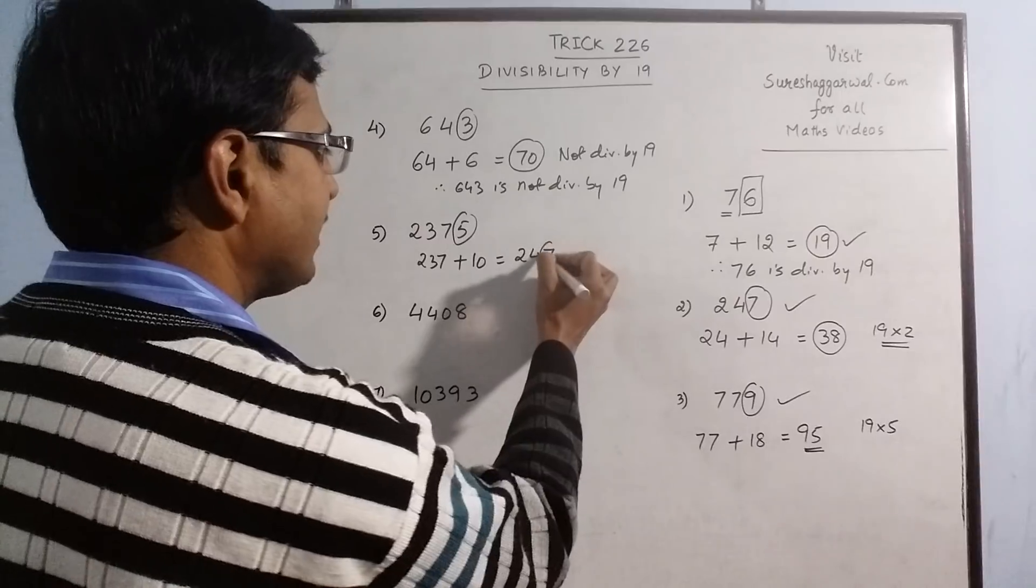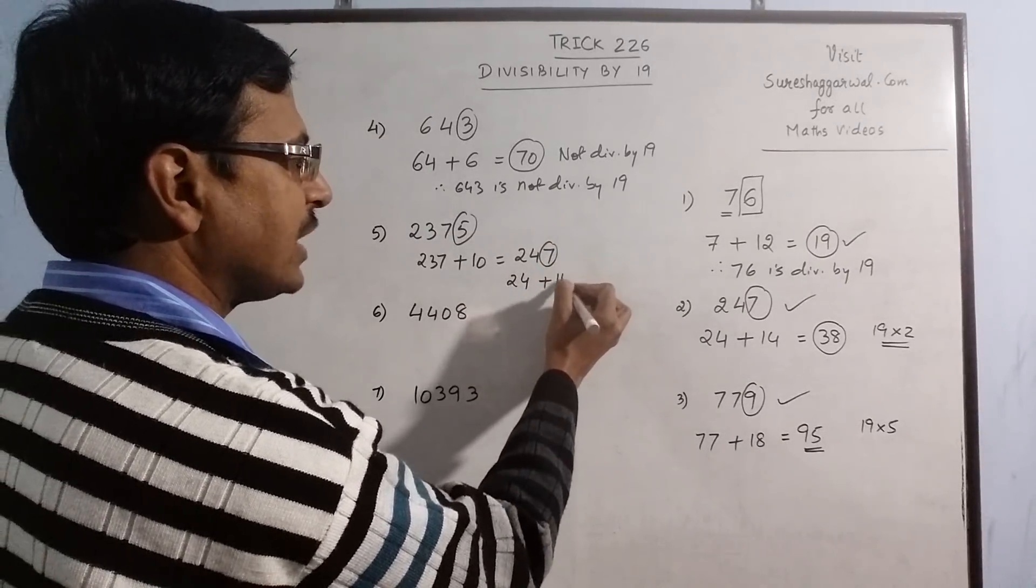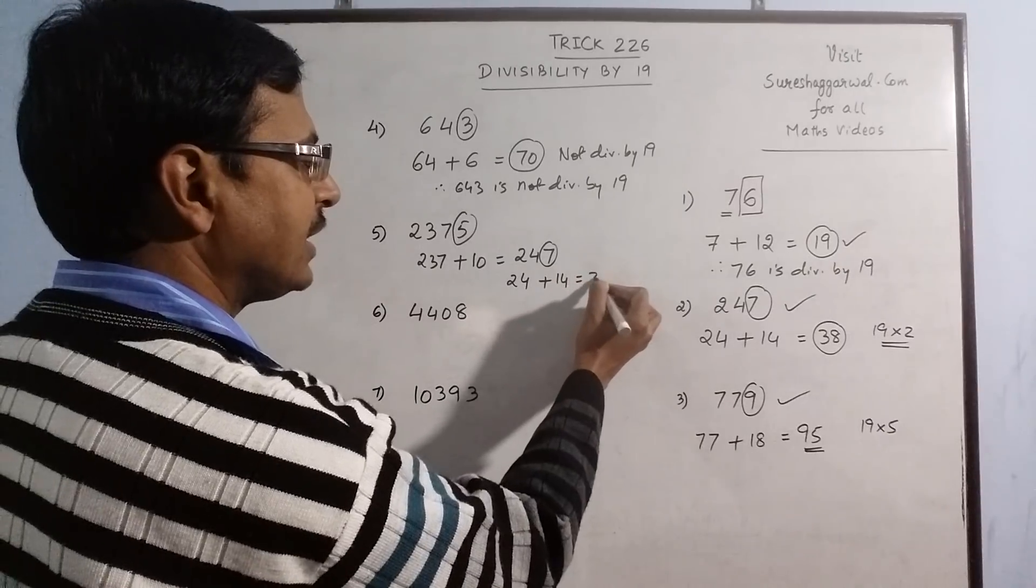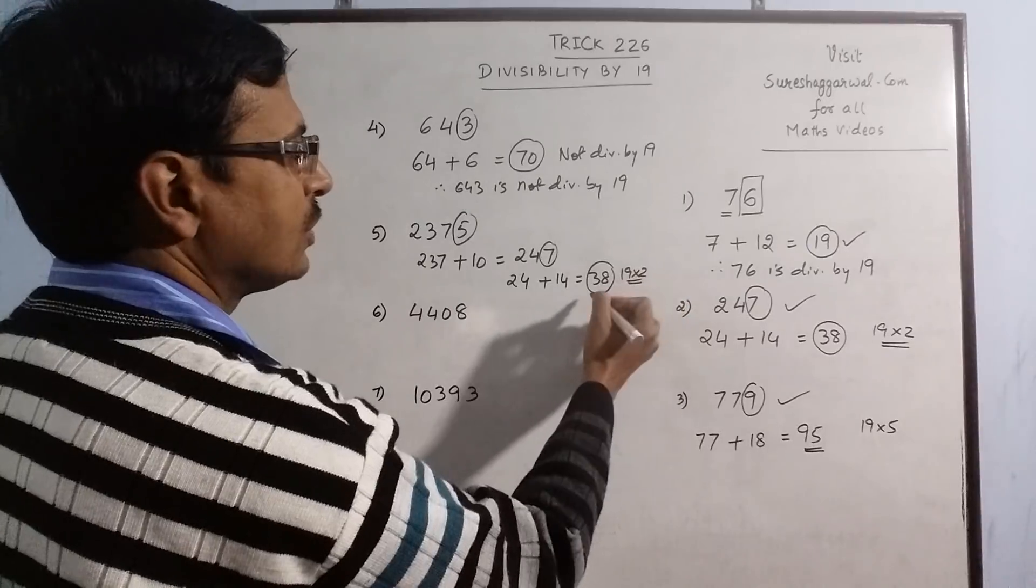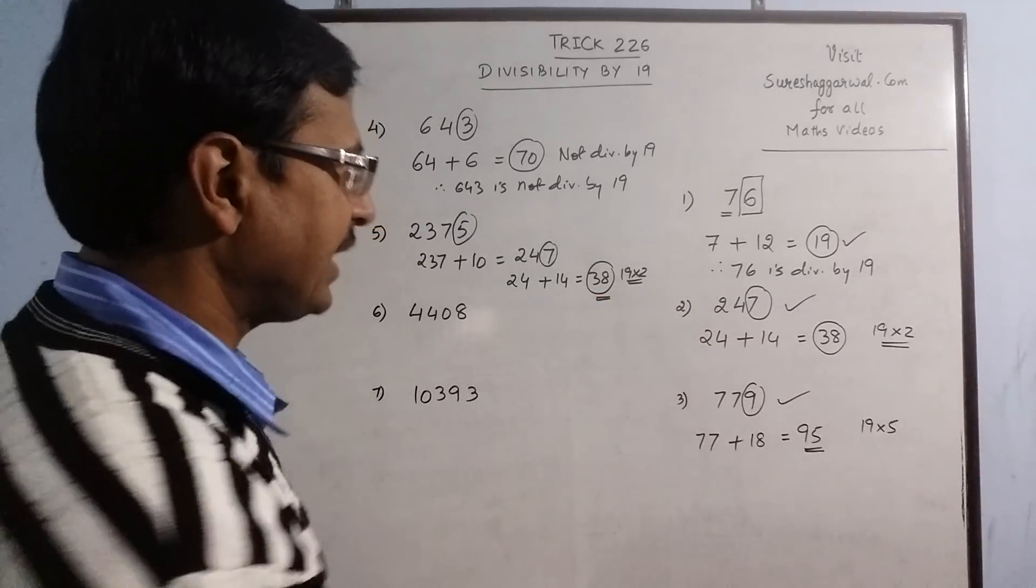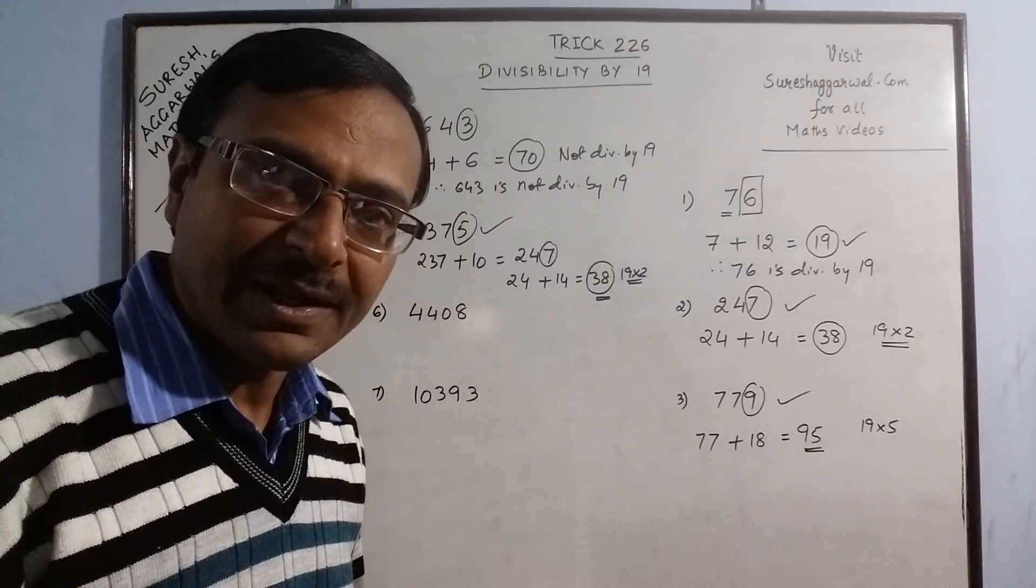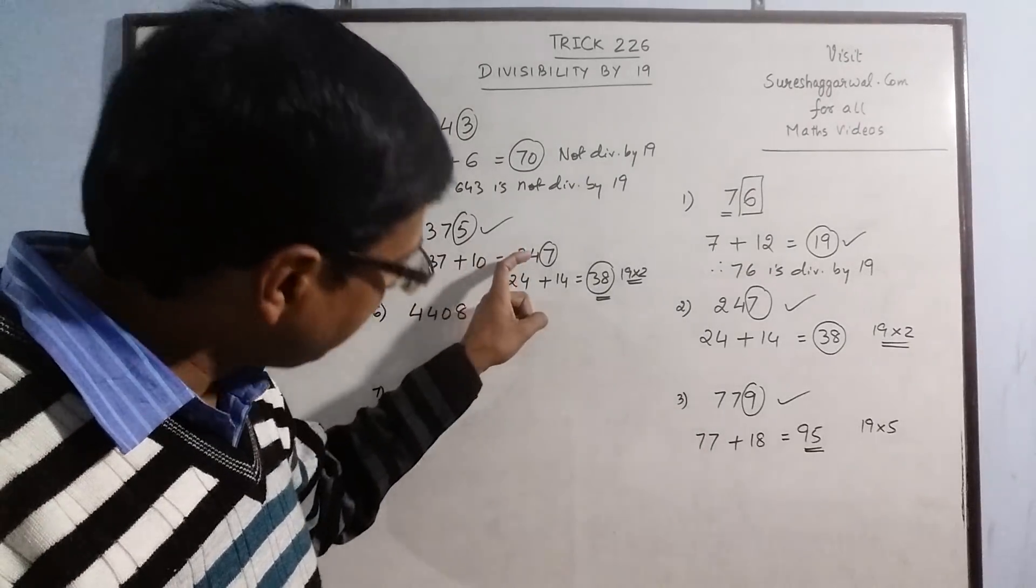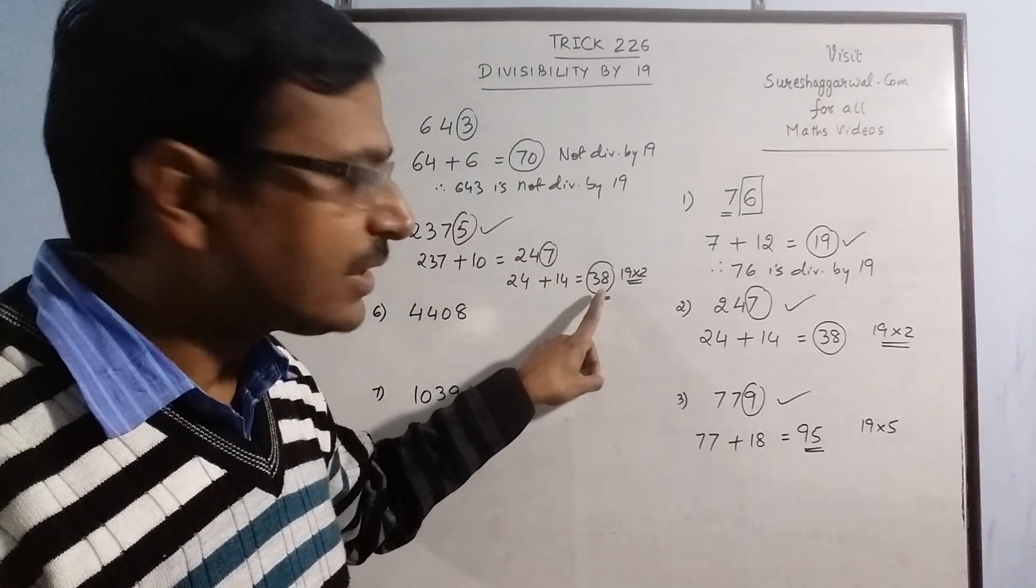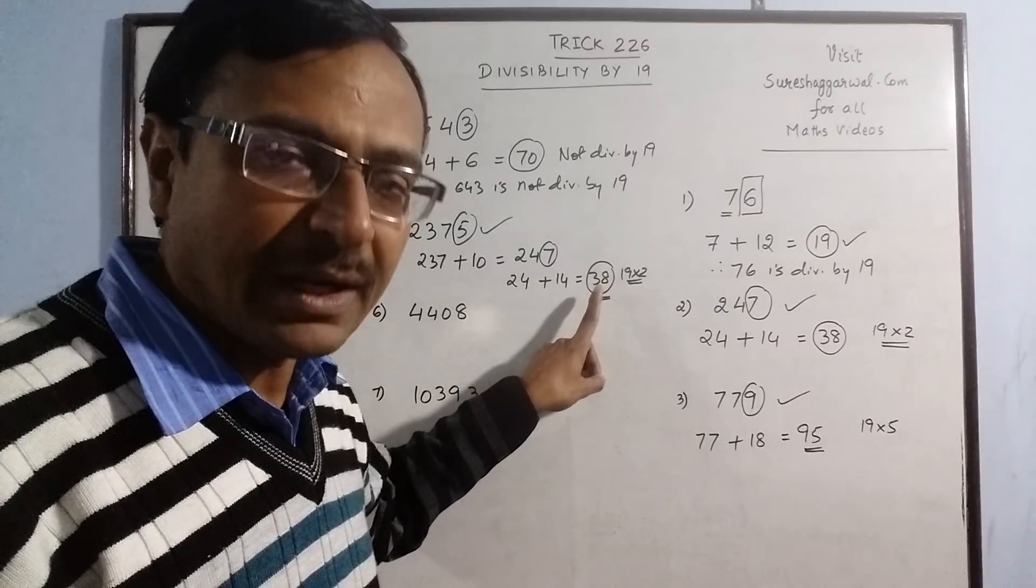See, here we have 7. So you get 24 plus double of 7 is 14. Now you get 38. 38 is 19 into 2. So this number is divisible by 19. So the entire number 2375 is divisible by 19. So if you get a larger number after the first step, you can repeat that step on that number and in turn get a smaller number which can easily be tested for divisibility by 19.